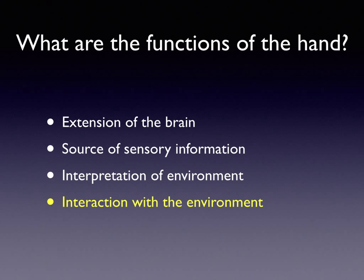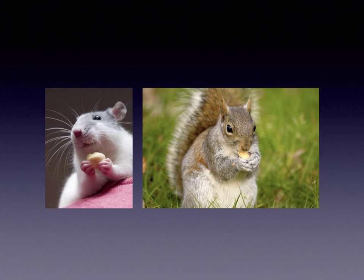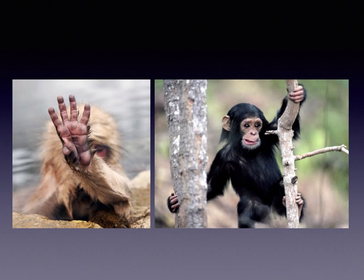By processing sensory information, we can interpret our environment and we can interact with our environment. The forelimb of lower mammals is really just used for grasping, for feeding, and so on. When we start to look at the primates, the thumb increases in length — this primate's thumb is really just for grasping and for transfer through trees.